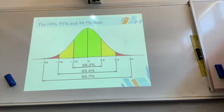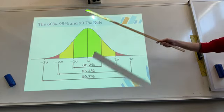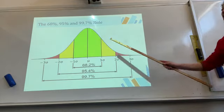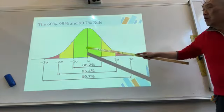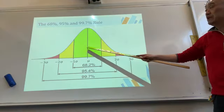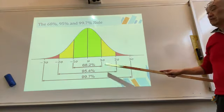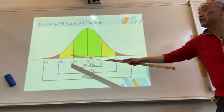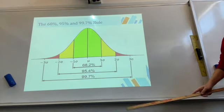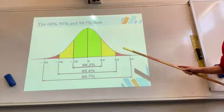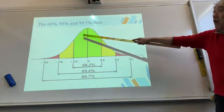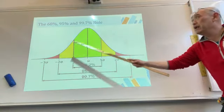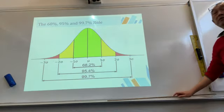The 68-95-99.7 rule means: 68% is one standard deviation either side of the mean, 95% is two standard deviations either side, and 99.7% is three standard deviations either side. These all represent probabilities — the area under the curve for a normal distribution equals one.